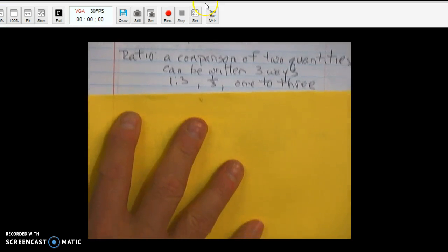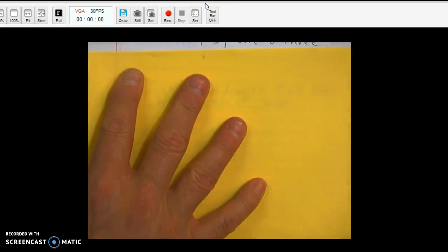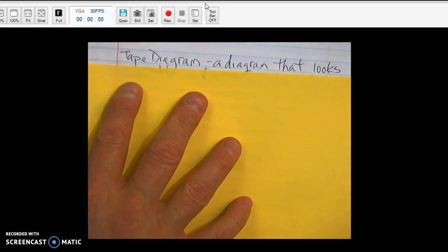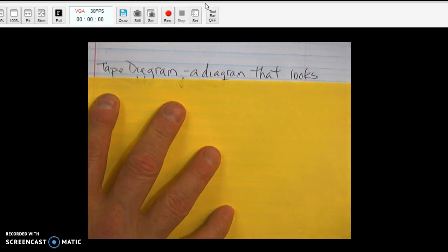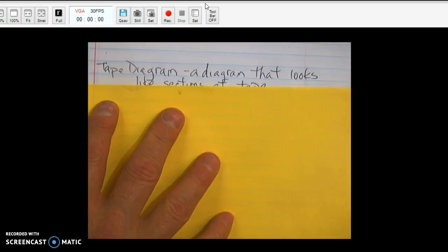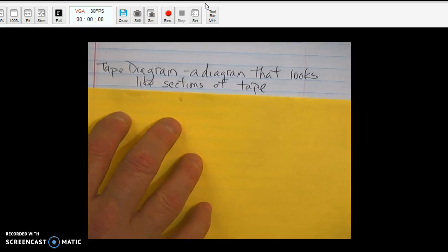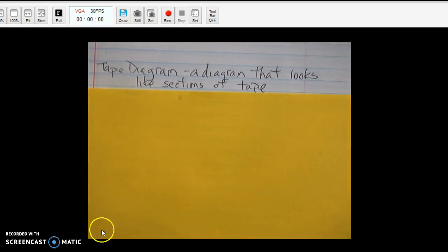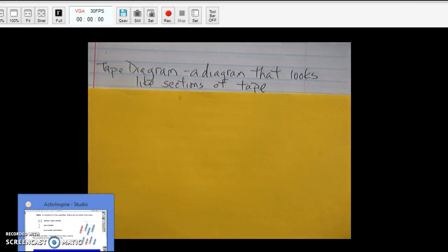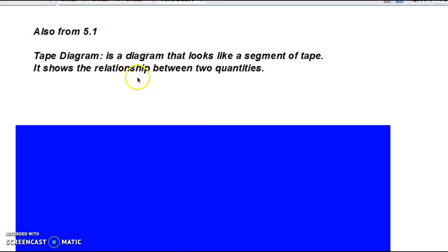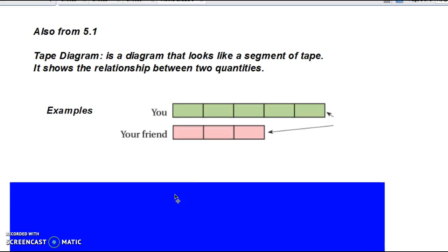On the same page, also from 5.1, Tape Diagram. A diagram that looks like sections of tape. It shows the relationship between two quantities. We will work with these in Section 5.1 in your record and practice journals.